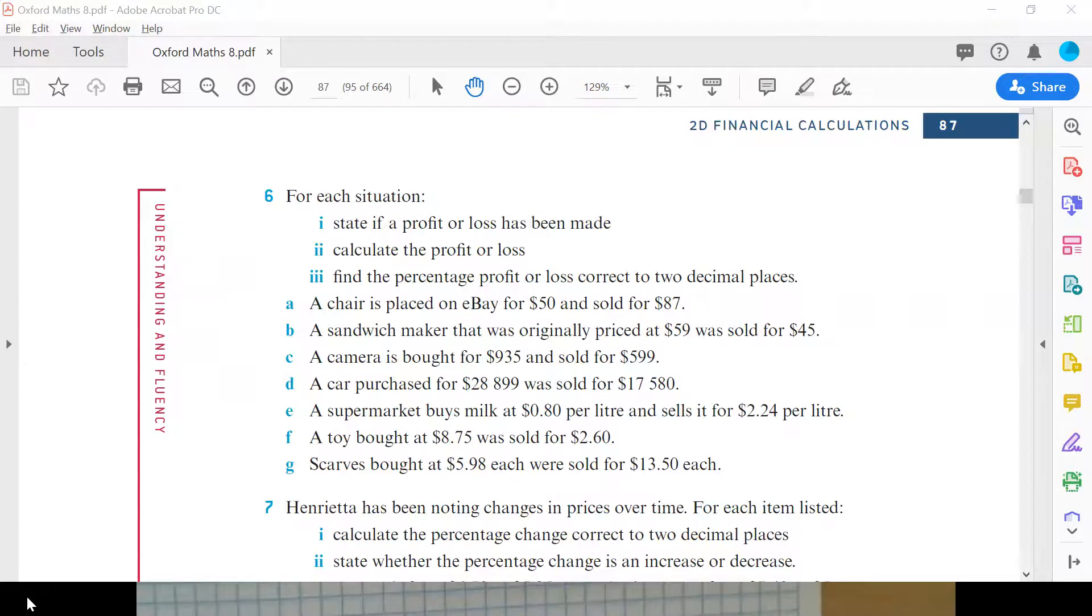All right. So we'll have a go at question 6. We will just do one of them. Since I've set a couple of them for you to do, I'll choose one that we haven't done. We'll do something different to a car this time. Let's do a camera. All right. So the camera is bought for $935 and sold for $599.